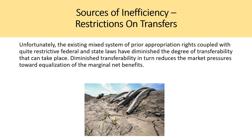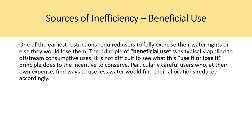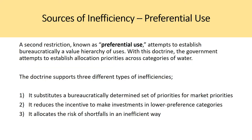Beneficial use is another source of inefficiency. One of the earliest restrictions required users to fully exercise their water rights or else they would lose them — use it or lose it. The principle of beneficial use was typically applied to off-stream consumptive uses. This use-it-or-lose-it principle destroys the incentive to conserve: careful users who find ways to use less water at their own expense would find their allocations reduced accordingly, because the state would then transfer those rights to someone who is using them.